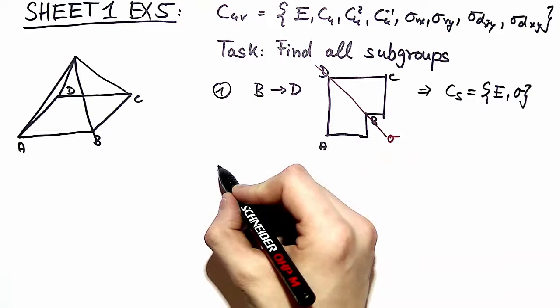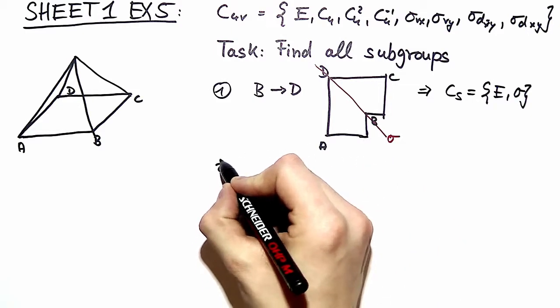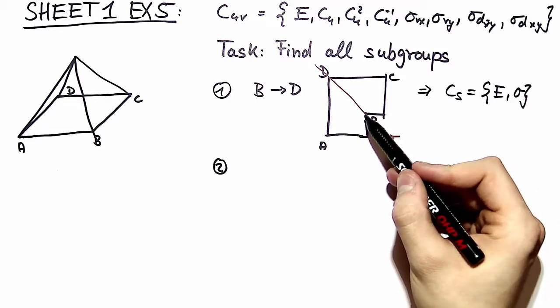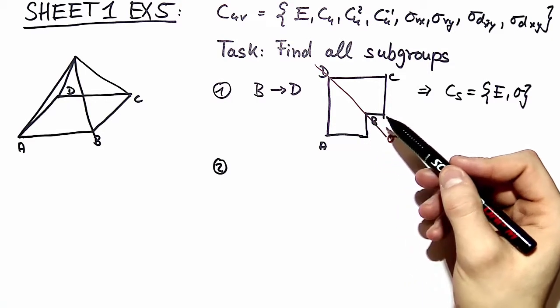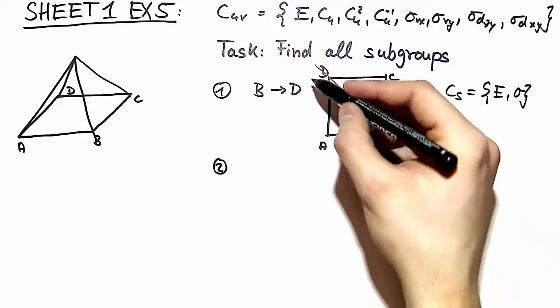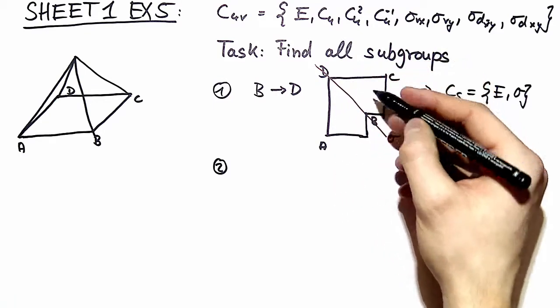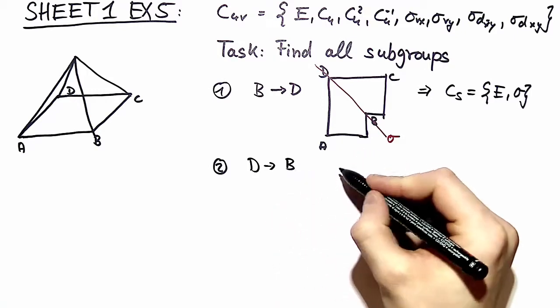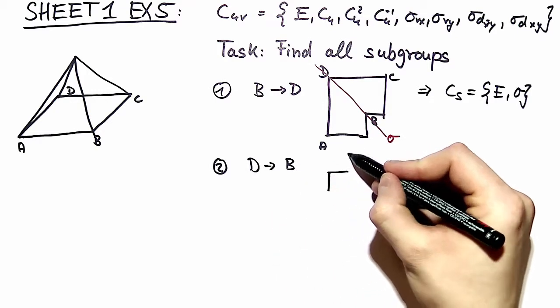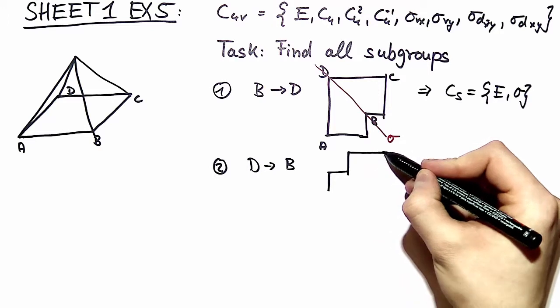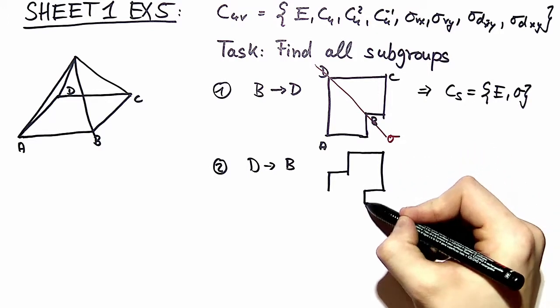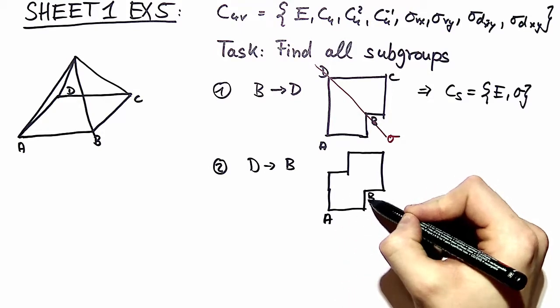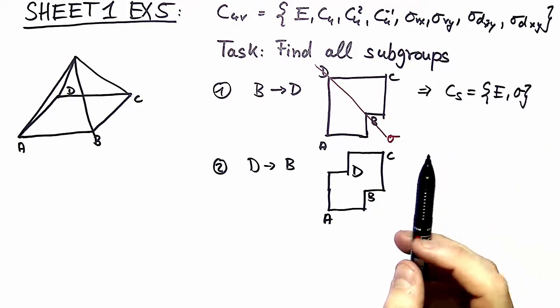A second way to distort this system is thinking - well, can we do the same distortion but keep a little more symmetry? Yes we can. We can move point D similarly to B and we arrive at this kind of structure. We have A here, B here, C here, D here.